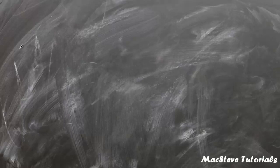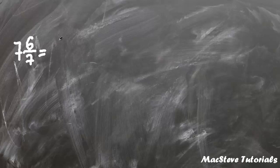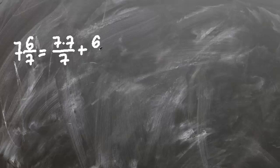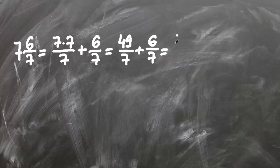Now in this example we will convert 7 and 6 sevenths into improper fraction. First step is to multiply 7 by 7. And by doing so we get 7 times 7 over 7 plus 6 sevenths. Now this is same as 49 sevenths plus 6 sevenths. Now this is same as 49 plus 6 over 7, which is 55 sevenths.